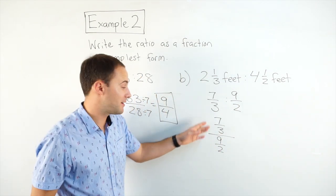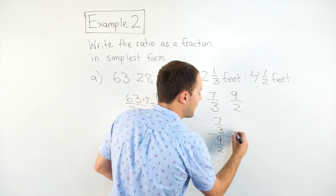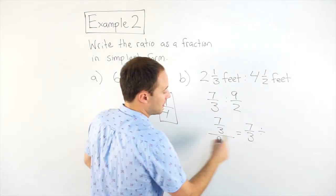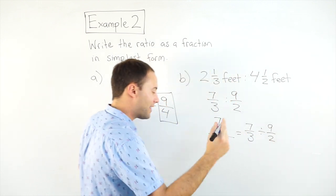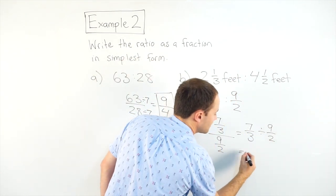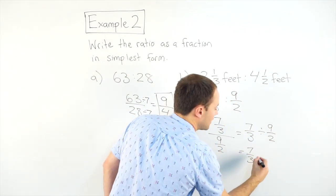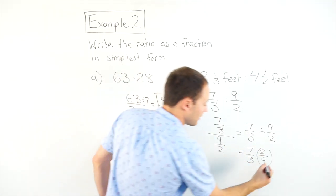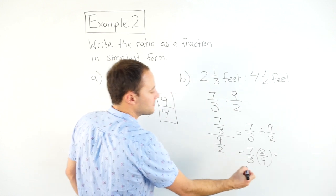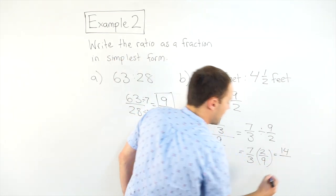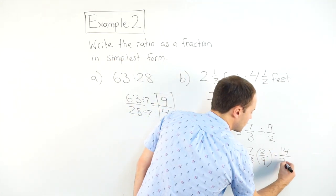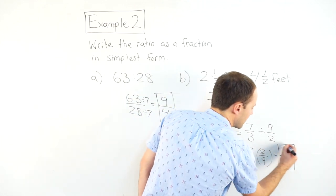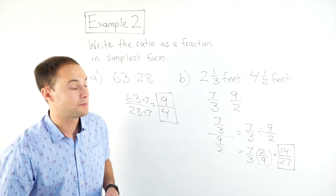That's a complex fraction again. Fraction within a fraction. That just means 7/3 divided by 9/2. And that is the same thing as 7/3 times the reciprocal, which is 2/9. Nothing to simplify there, unfortunately. So 7 times 2 is 14. And 3 times 9 is 27. And there are no common factors there. So that is in simplest form.